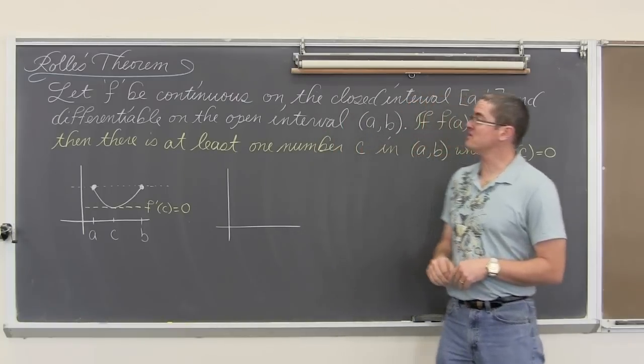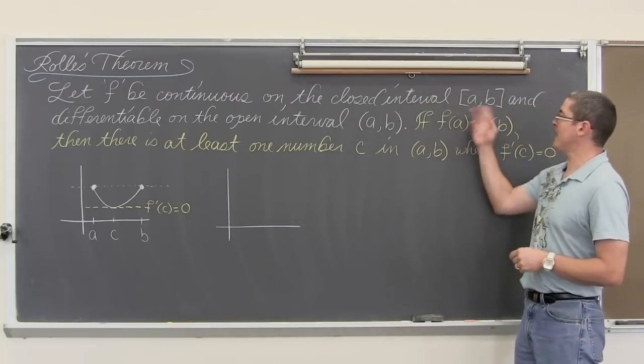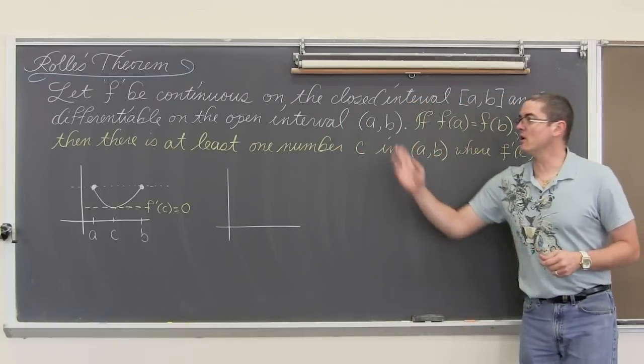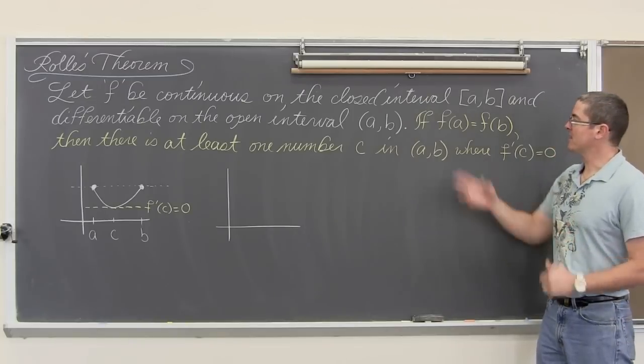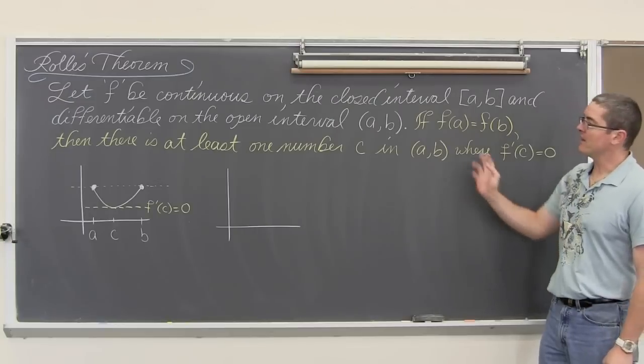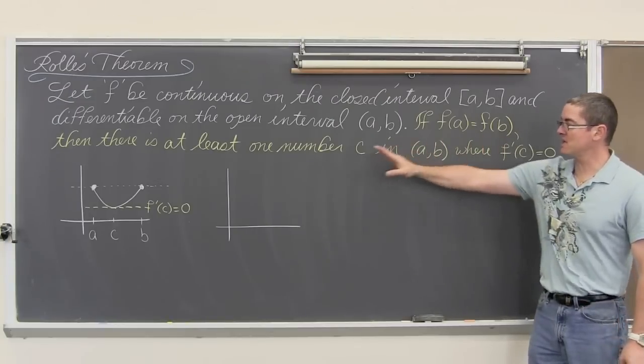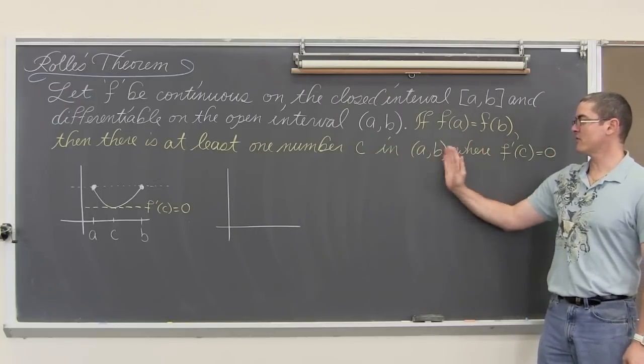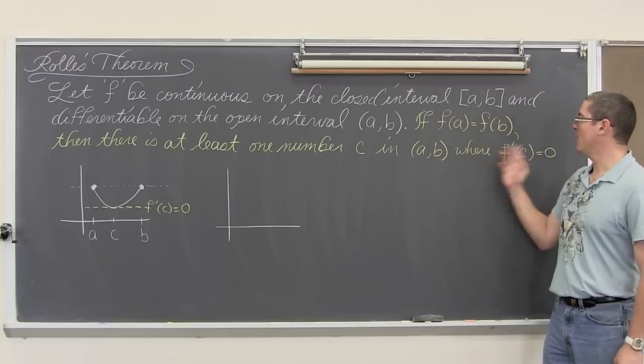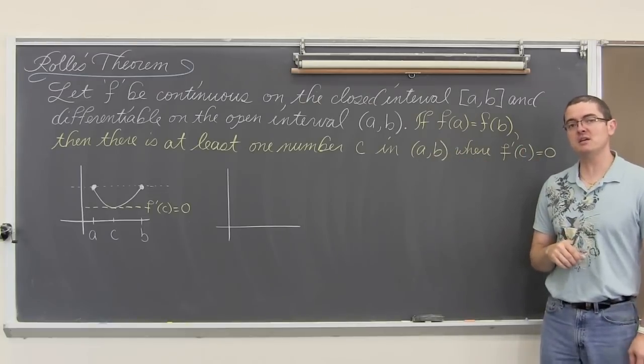It says let f be continuous on a closed interval [a,b] and differentiable on the open interval (a,b). If f(a) equals f(b) then there is at least one number c in this open interval from a to b where f'(c) is equal to zero.